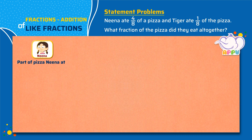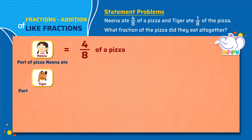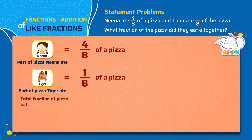Part of pizza Nina ate equals 4 by 8, and part of pizza that Tiger ate equals 1 by 8. To find the total fraction of pizza eaten by Nina and Tiger, we add 4 by 8 plus 1 by 8. We see that the denominators are the same for both the fractions — that is 8.